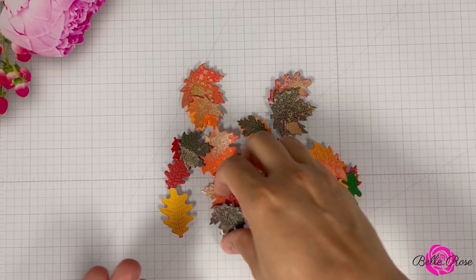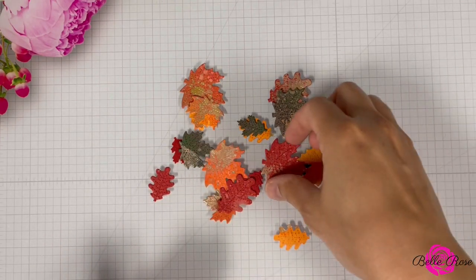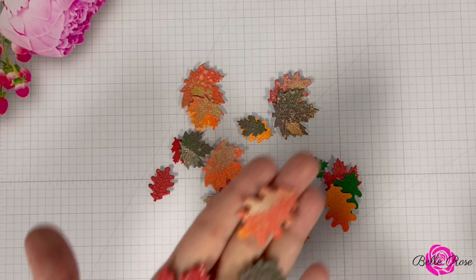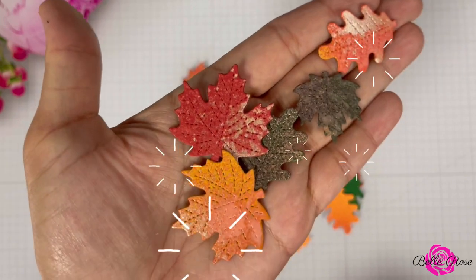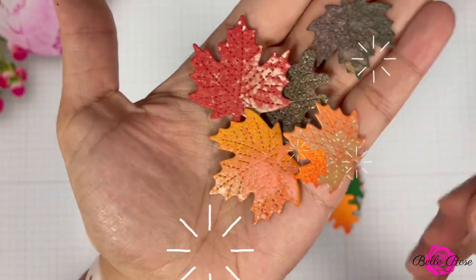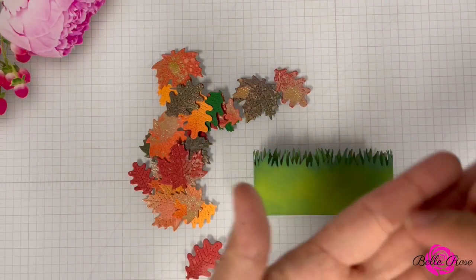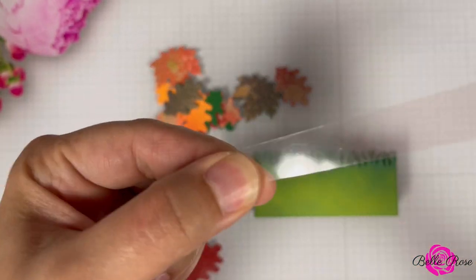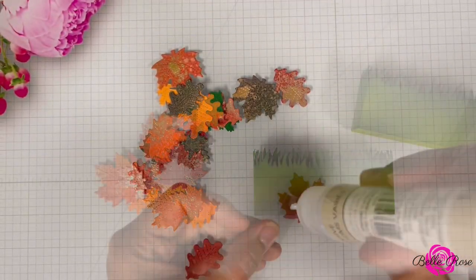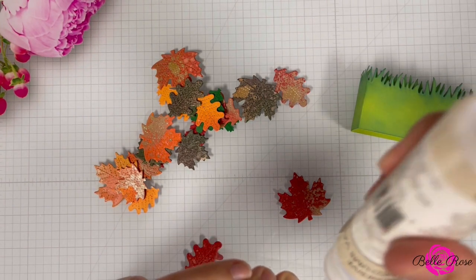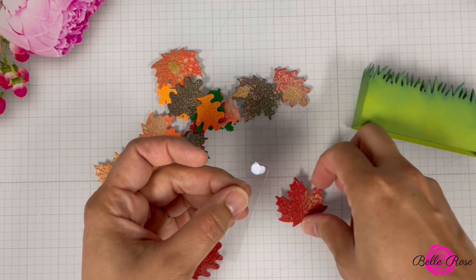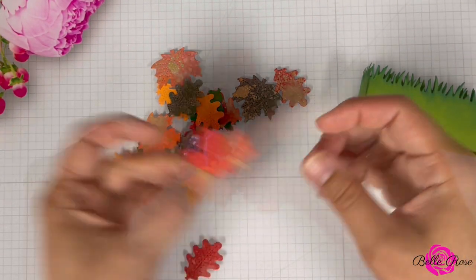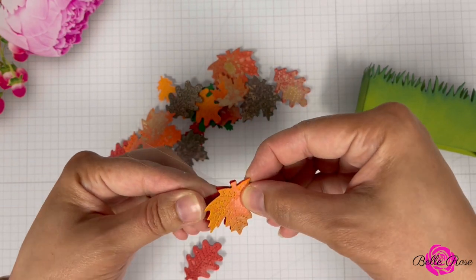I'm now bringing back in my leaves after they dried and oh my goodness, I am so glad I decided to add the Tarnished Brass Spray Stain. I love the metallic shine. Love it. I'm now going to bring in a piece of acetate and I'm going to add some leaves to the front and the back. I'm going to adhere them to the acetate using adhesive glue, but feel free to use adhesive tape if you like.